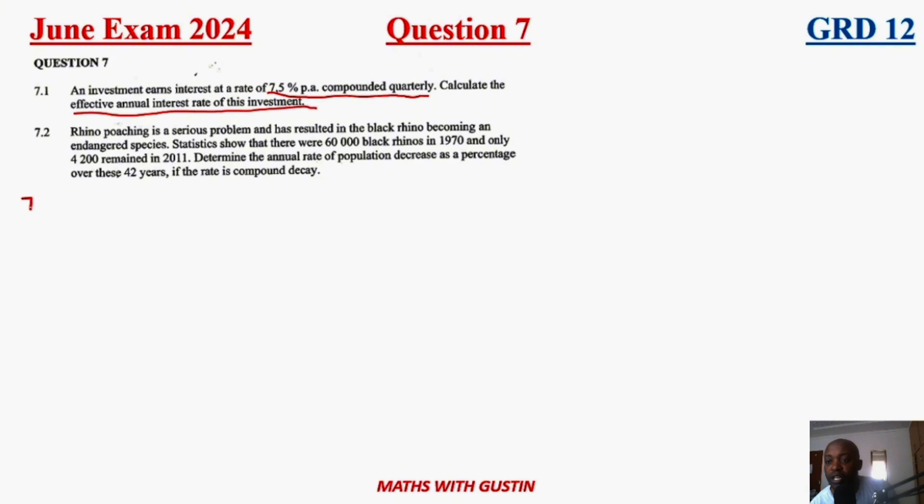They are looking for us to find the nominal rate. If you go into your formula sheet, you will find a formula given like this which is the relationship between nominal and effective rate. This is what we're going to use for 7.1. We're looking for the effective, so we're going to take one to the other side. Let's just do our substitution right here.